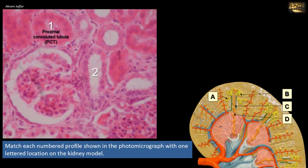The proximal convoluted tubule reabsorbs approximately 75% of the glomerular filtrate. The reabsorptive function is reflected in the structure of the epithelial lining: simple cuboidal epithelium with a prominent brush border, which increases the surface area for reabsorption. The brush border is the light microscopic feature of microvilli that can only be seen in electron microscopy. The cytoplasm is deeply stained due to high content of organelles, principally mitochondria, which supply energy for transport processes, along with pinocytotic vesicles and lysosomes that reabsorb and degrade small amounts of protein leaking through the glomerular ultrafilter.